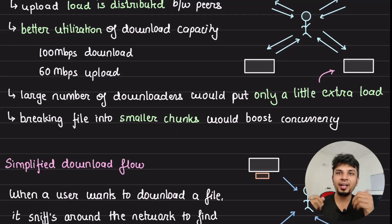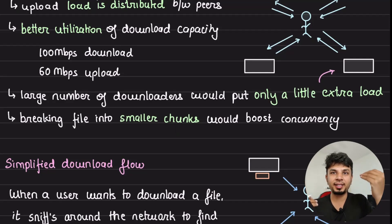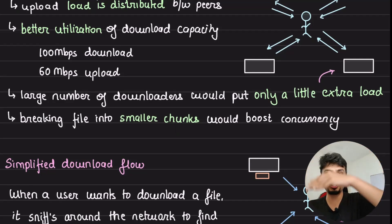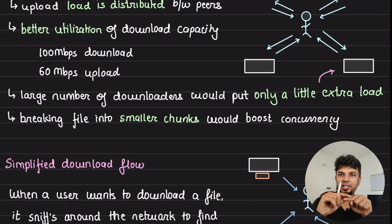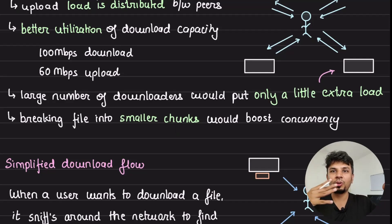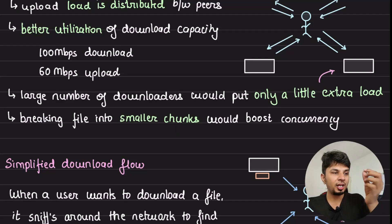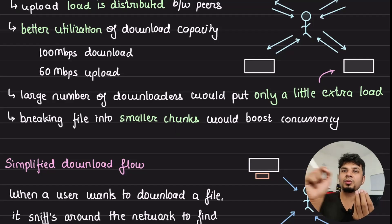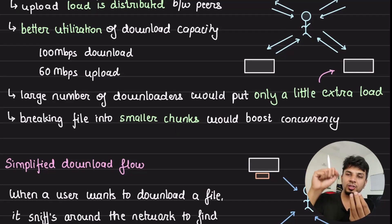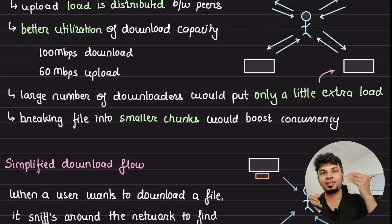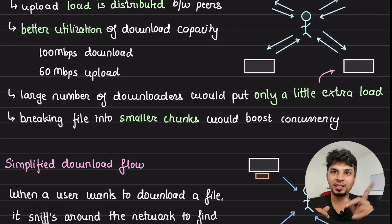Breaking the file into smaller chunks will boost concurrency. Your file is typically split into chunks that are distributed over the network. You know which chunk you want and which peer has it. To make downloads very concurrent, you would make connections to 50 peers in one shot to download all 50 chunks together, giving you much faster download speeds. And this is the beauty of BitTorrent.